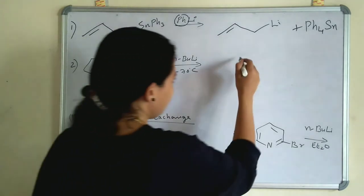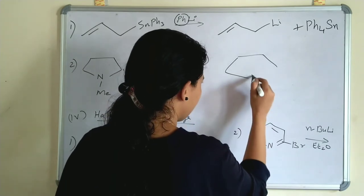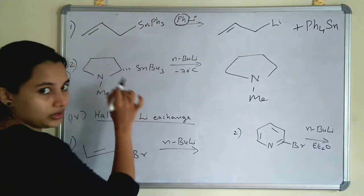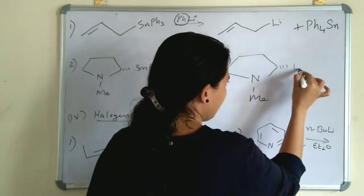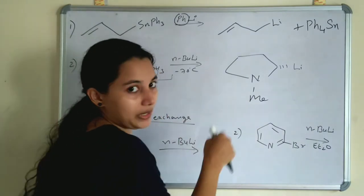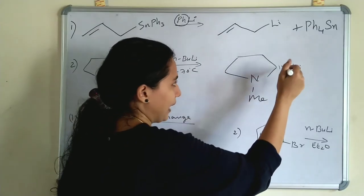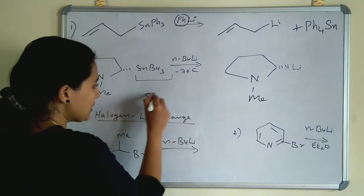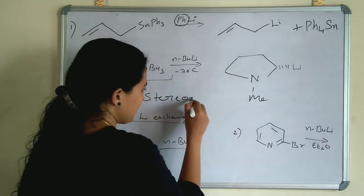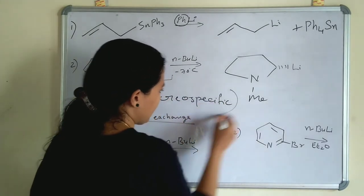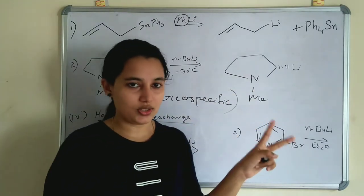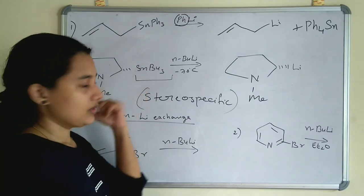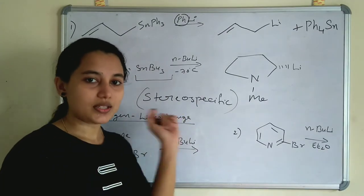In the second example of metal exchange, n-butyl lithium is added to the tin compound: SnPh₃ is replaced by lithium, and the stereochemistry remains the same. These metal exchange reactions are stereospecific — the stereochemistry does not change. Lithium attaches at the same position as the tin was in the reactant.